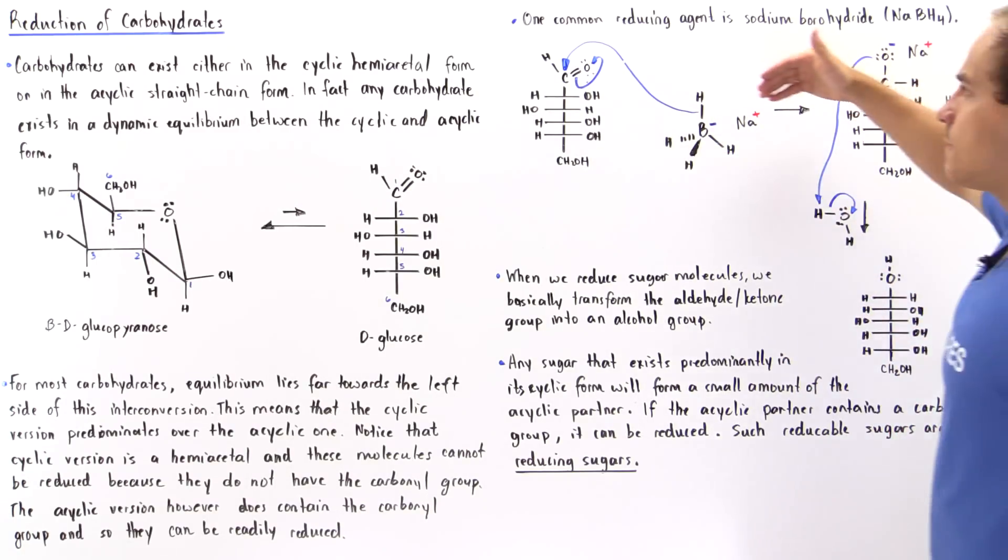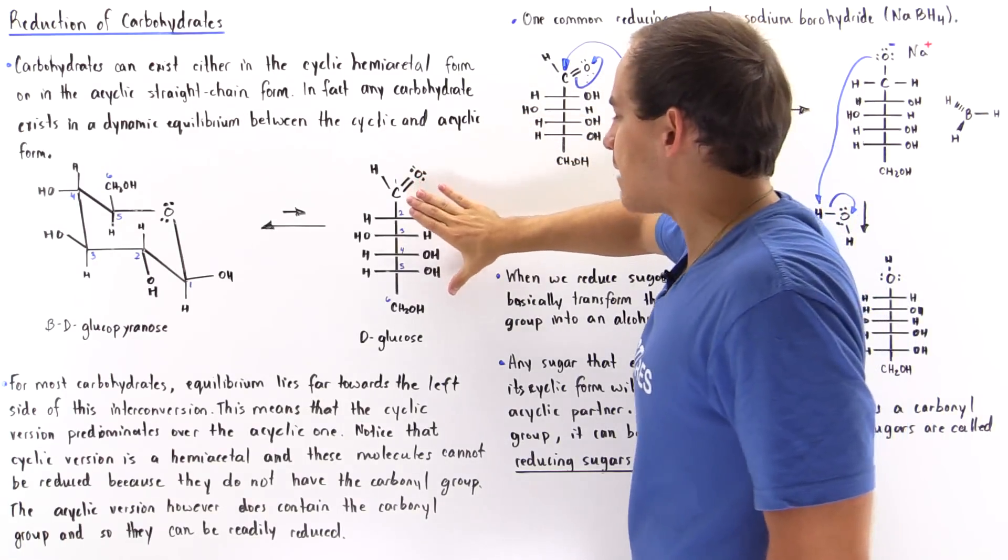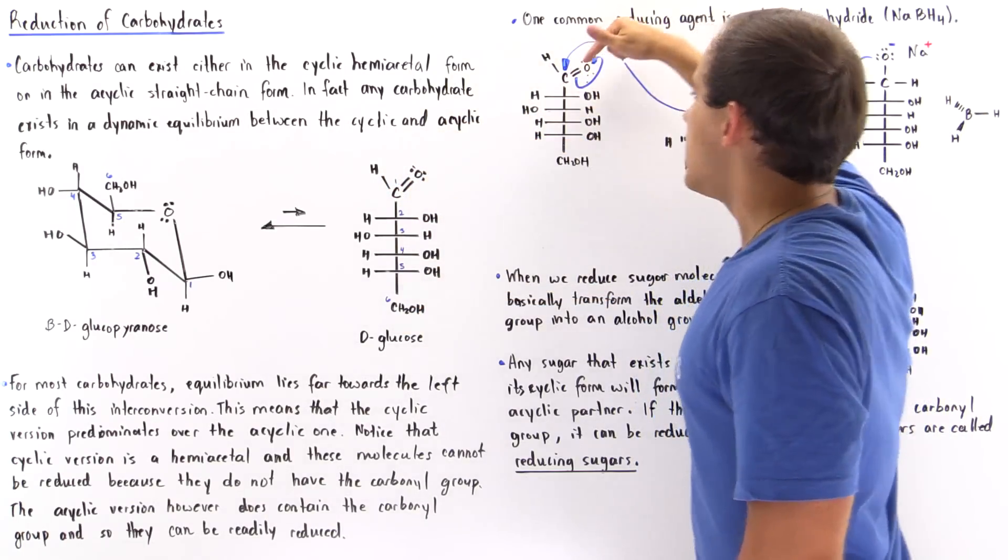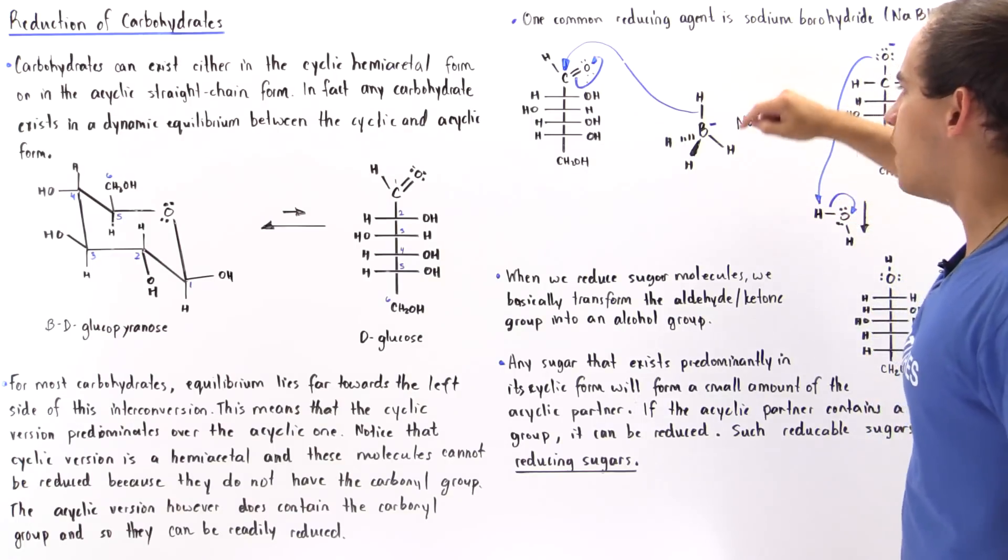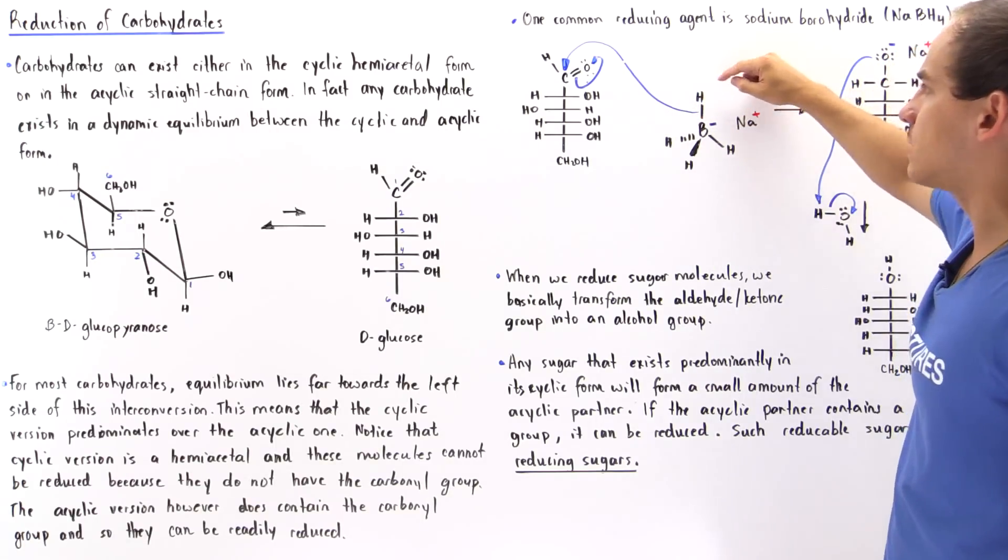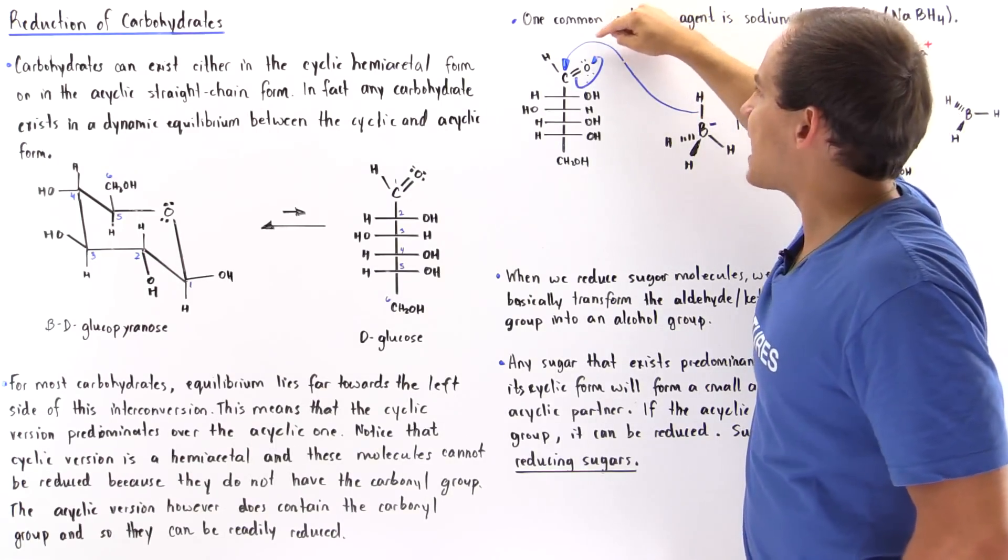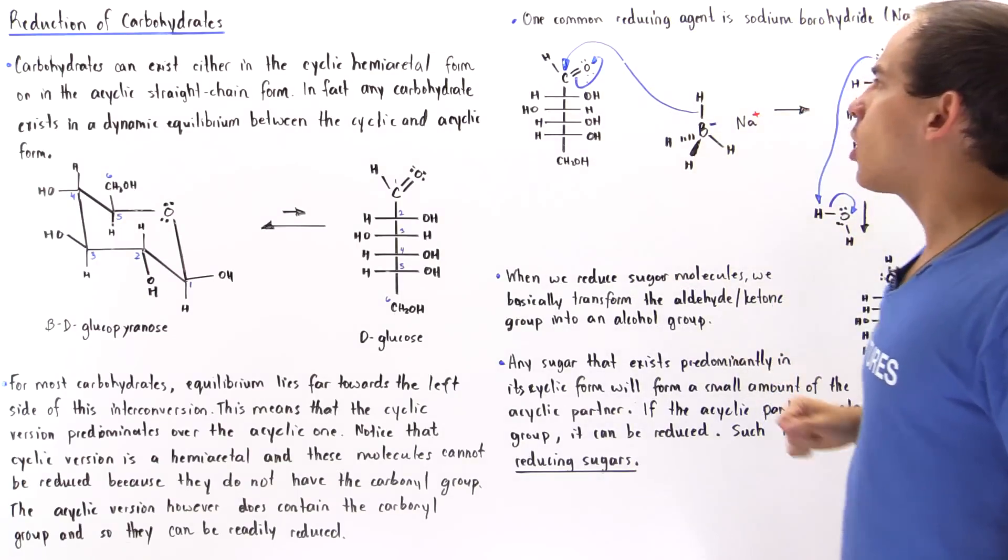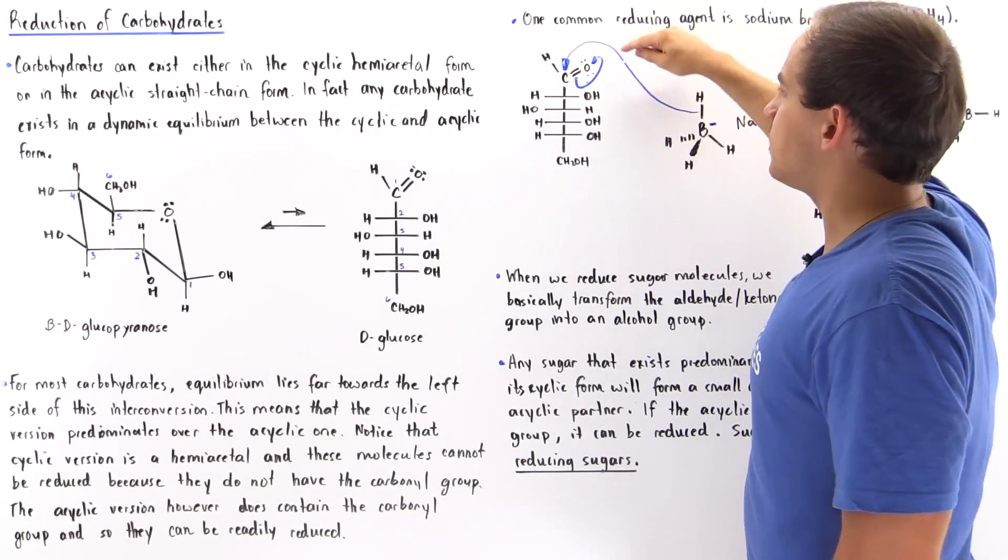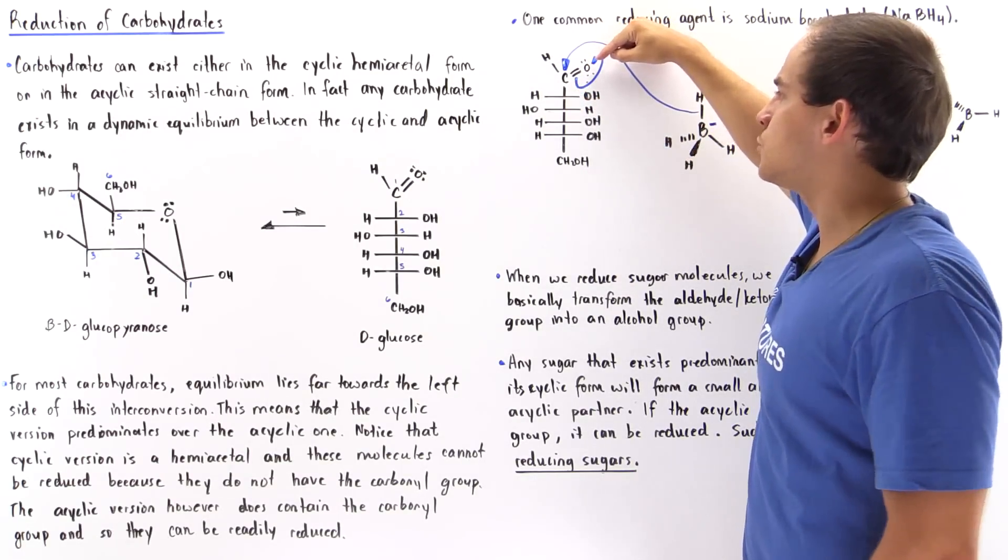Basically, in the first step, because we have this D-glucose that contains the aldehyde group, we have the carbon-oxygen double bond. One of these H molecules, one of the hydride atoms, will basically attack this carbon of the carbon-oxygen double bond, displacing our pi bond and placing it onto this oxygen.